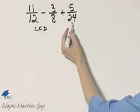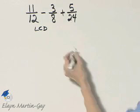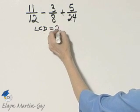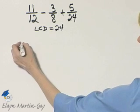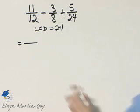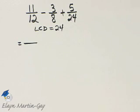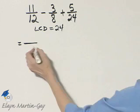Well, I know 12 divides into 24 evenly and so does 8, so our least common denominator is 24. We're going to take a step then. We're going to rewrite each fraction as an equivalent fraction, but with a denominator of 24.